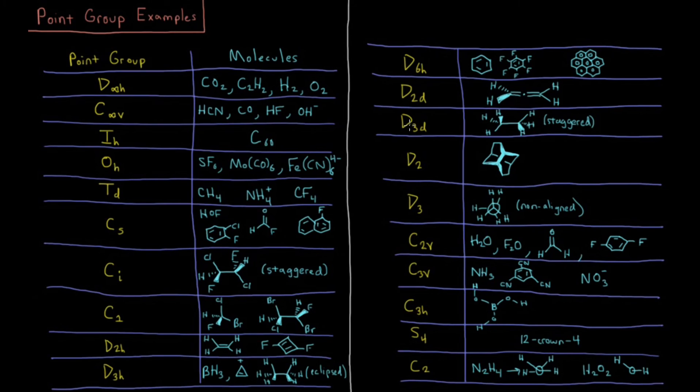S4, just like the DND groups, the DN groups, is even funkier to try to realize. 12-crown-4, the crown ether, is an example.